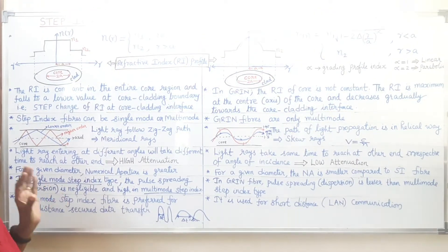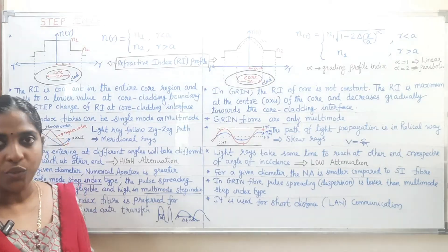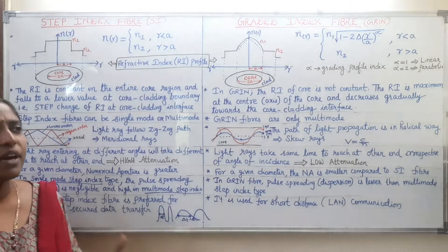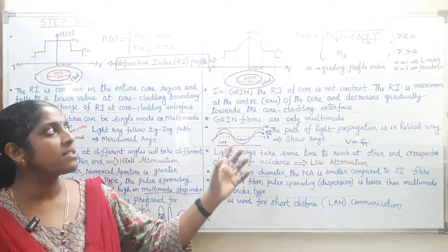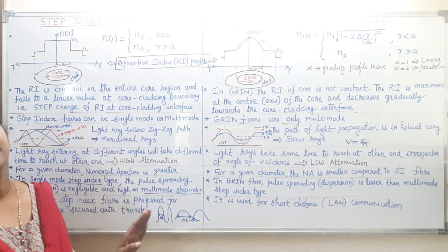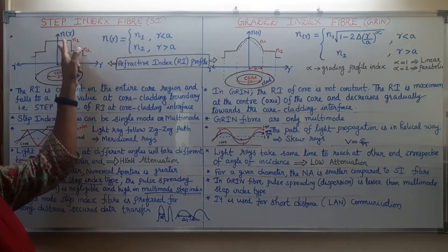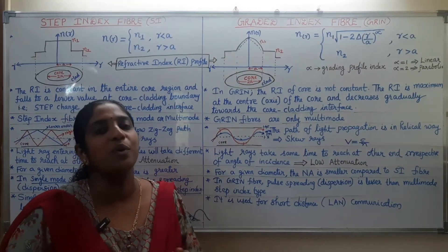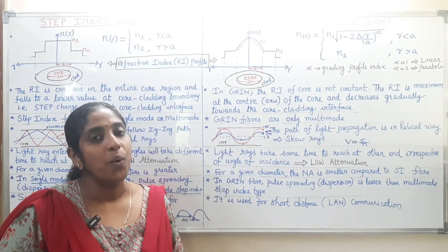In short, whatever optical fiber is used — single mode step index, multi-mode step index, or graded index — there can be some losses. Single mode step index fiber is preferred for long-distance, secure data transfer. Graded index fiber is used for short-distance communication. The main difference is that in step index fiber the refractive index is constant throughout the core, whereas in graded index fiber the refractive index gradually decreases from the center of the core to the core-cladding boundary. Step index fiber can be single mode or multi-mode, but graded index fibers are only multi-mode.